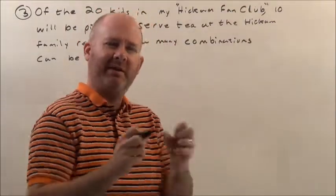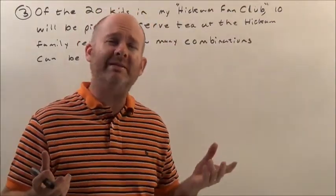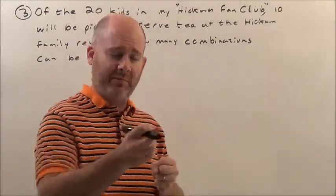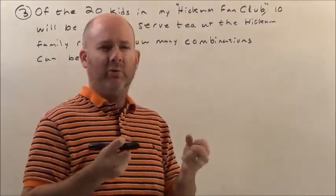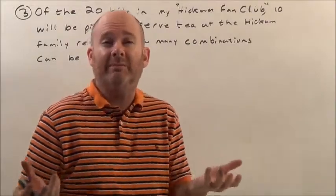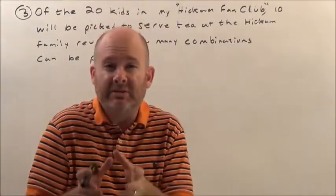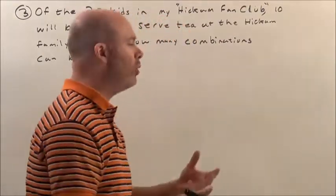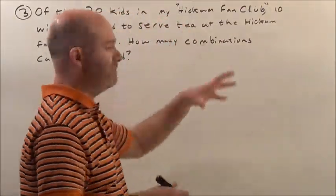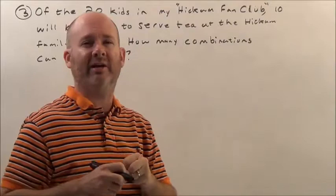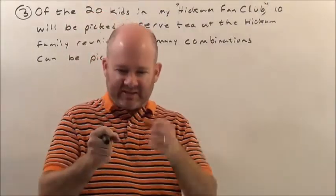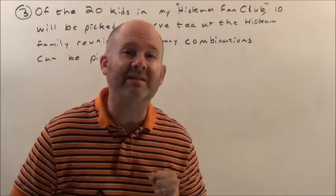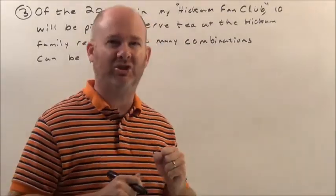I have 20 kids and I'm going to pick 10. The order doesn't matter here at all. If I pick Jim and pick Bob, it doesn't matter who gets picked first. It's not like there's spot one, spot two, spot three — it's not like a president, vice president. Order doesn't matter. I'm just going to pick 10 out of the 20. This and this is the same as this and this. Order doesn't matter — that means it's a combination problem.